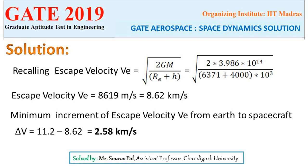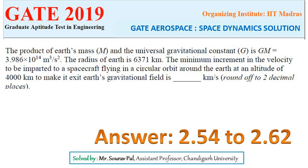So the change in velocity between the Earth's surface and the spacecraft is 11.2 minus 8.62, which is approximately 2.58 km per second. This is within the reasonable answer range of 2.54 to 2.62. So the right answer is 2.58 km/s.